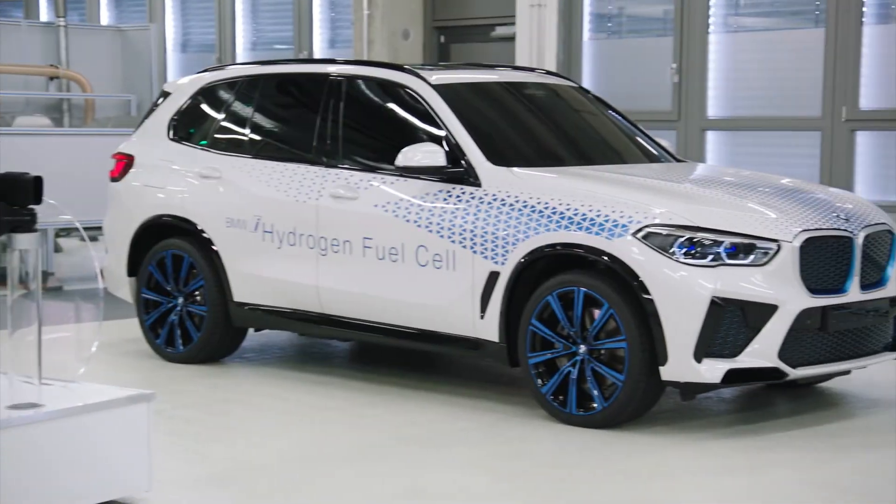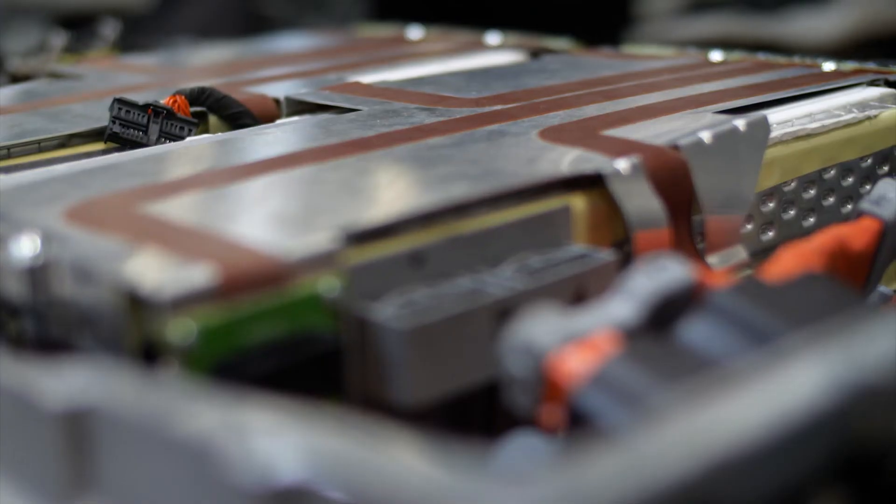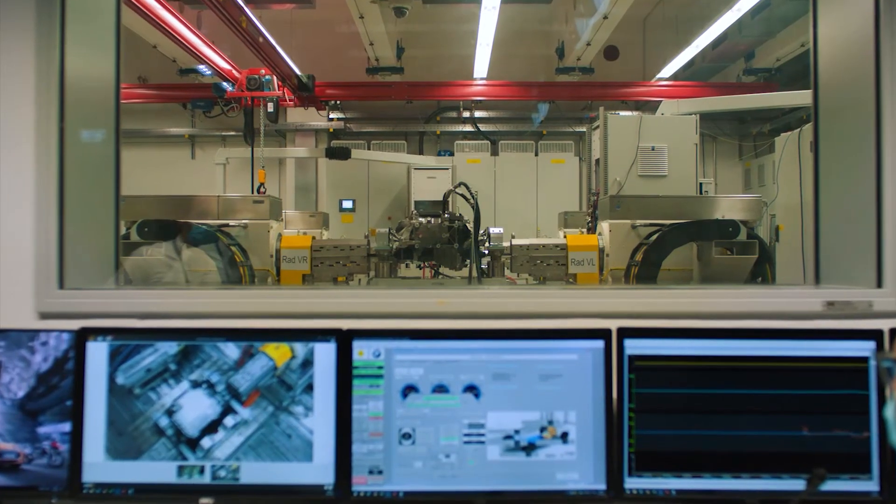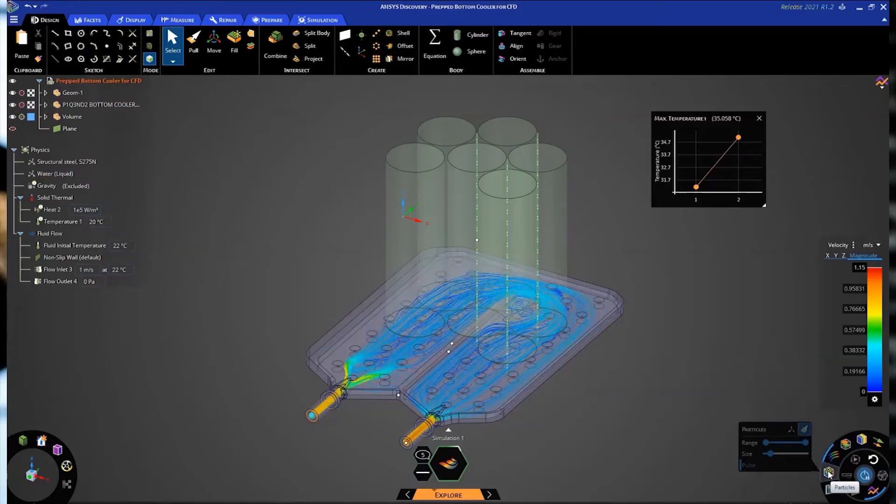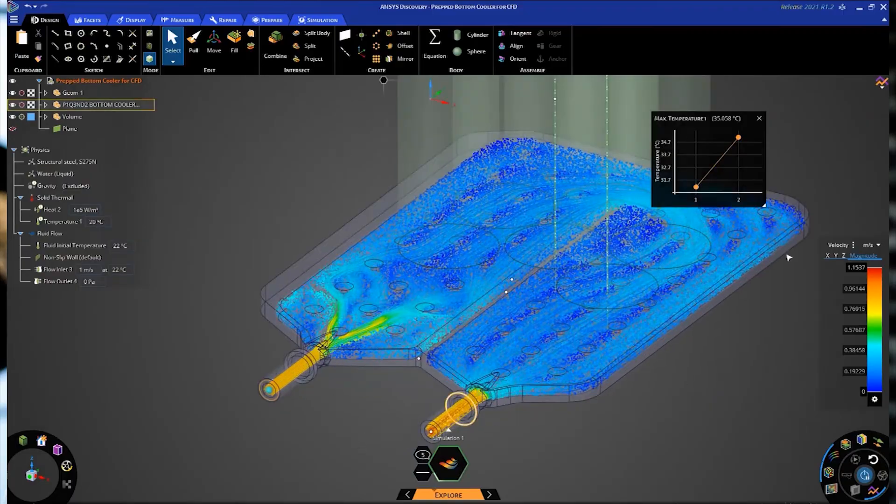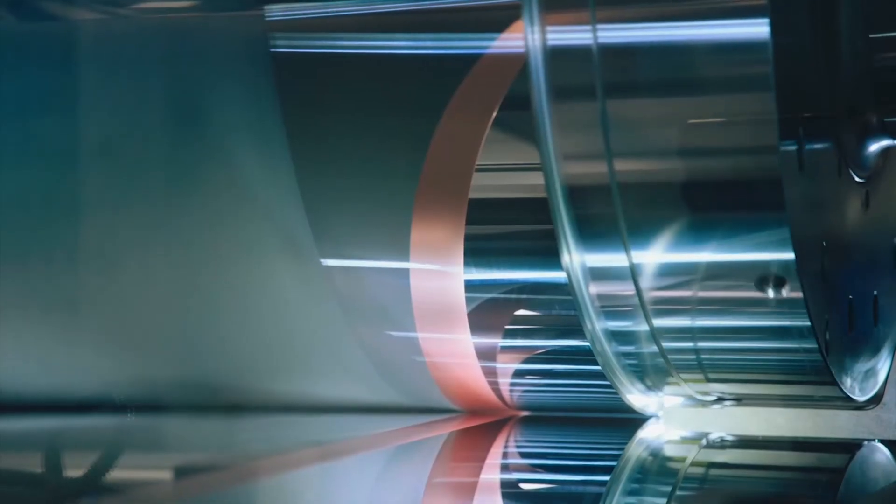Then we have the fuel cell BX5 program. We managed to integrate this extremely small power dense battery pack just underneath the trunk floor and it doesn't compromise any passenger comfort but still delivers 150 kilowatts in a package that is a bit more than two shoe boxes in size.